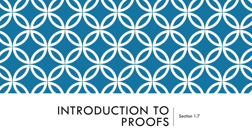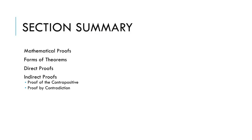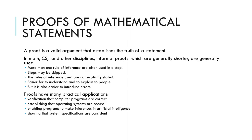Today's topic is introduction to proofs in discrete mathematics. We will speak about forms of theorems, direct proof, and indirect proofs — the two major types being contrapositive and contradiction. A proof is a valid argument that establishes truth about a statement. In math and computer science, formal proofs are important: we need them to verify a computer program is correct and to establish that an operating system is secure.